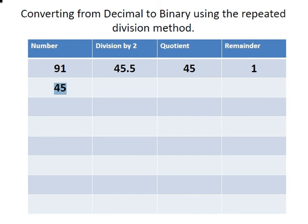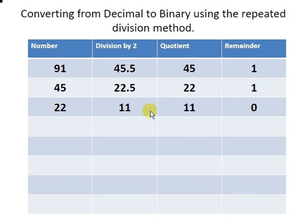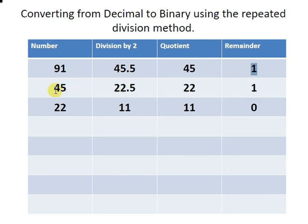Again we divide by 2: 45 ÷ 2 gives 22.5, so the quotient is 22 and the remainder is 1. We bring down 22, divide by 2 to get 11 — quotient 11, remainder 0. Both 91 and 45 are odd numbers, so we get a remainder of 1; 22 is even, so we get a 0. Odd numbers give a remainder of 1, even numbers give a remainder of 0.